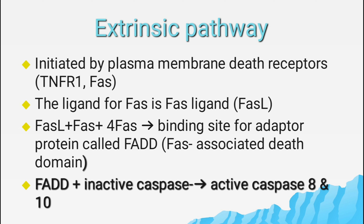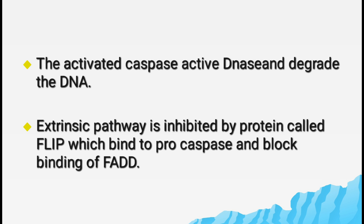The extrinsic pathway is also known as the death receptor-initiated pathway, initiated by plasma membrane death receptors like tumor necrosis factor receptor type 1 and FAS receptor. The ligand for FAS is called FAS ligand, expressed on T cells and cytotoxic T lymphocytes. When FAS binds with FAS ligand, it brings four other FAS receptors together, forming a binding site for the adapter protein FADD — FAS-associated death domain — which activates caspase 8 and 10. A protein called FLIP in the extrinsic pathway can block this process. Intrinsic pathway activates caspase 9; extrinsic pathway activates caspase 8 and 10.